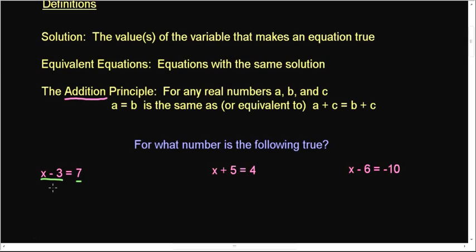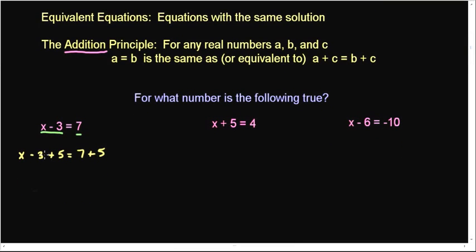I'm going to go ahead and add five to both sides. So x minus 3 plus 5 is equal to 7 plus 5. Now when I do this, I've got to combine like terms. And so I've got a negative 3 plus 5. That's going to give me x plus 2 equals 12.